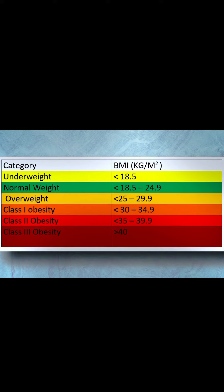The second category is people with a BMI between 18.5 and 24.9 — those people are normal weight. The third category is people with a BMI between 25 and 29.9 — those people are overweight.